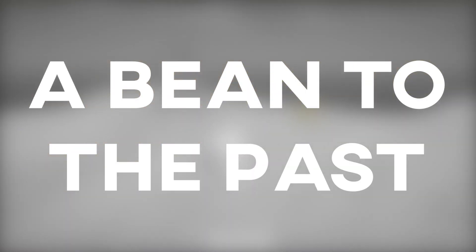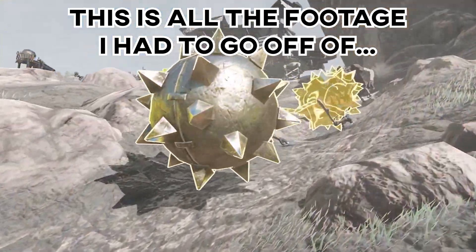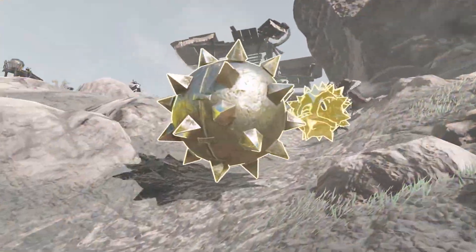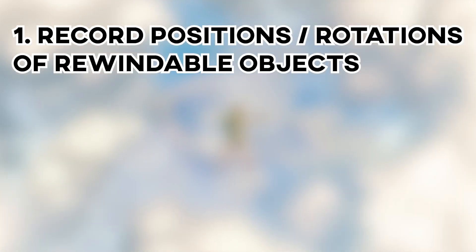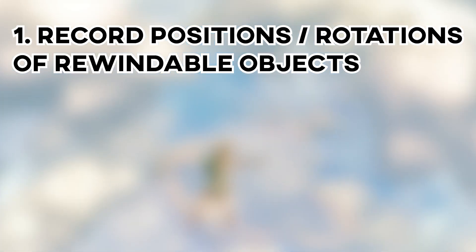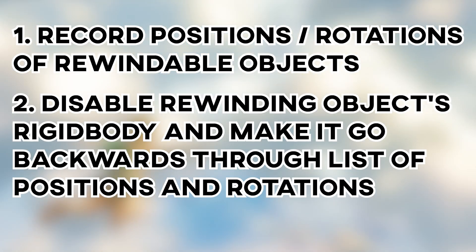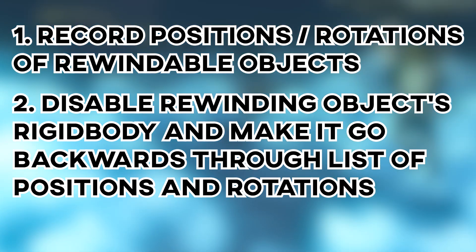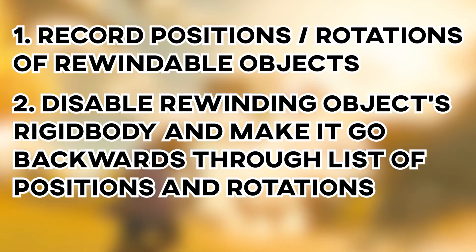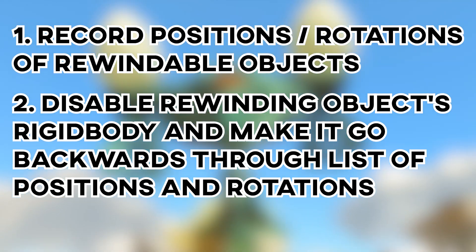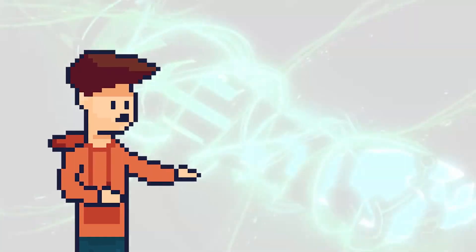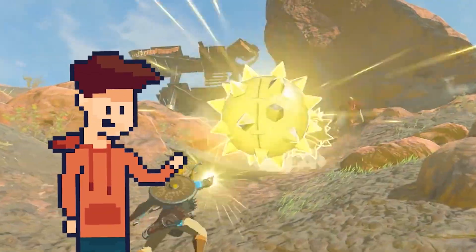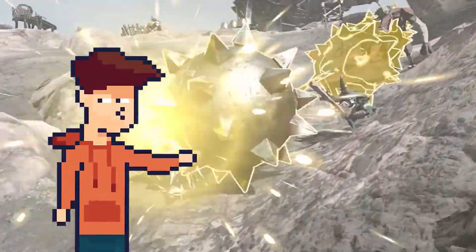So now I have to plan some stuff. Looking at the trailer, it seems like using the rewind rune on an object makes the object go backwards in time for a certain amount of time, at the same speed that it originally did these actions. So there are a few things I need to do. First off, you need to be constantly recording the positions and rotations of any object that can be rewound in time. I'm just guessing how it works, so I could be wrong, but I think I'm pretty close.